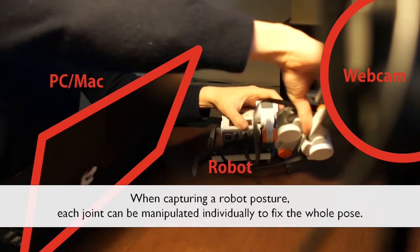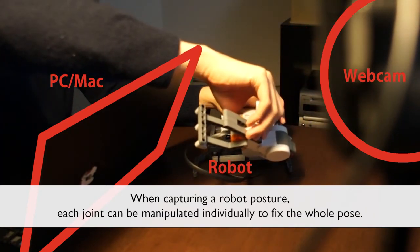When capturing a robot posture, each joint can be manipulated individually to fix the whole pose.